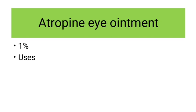I have discussed these cycloplegic drugs in my previous video on MBBS theory exams made easy, so you can go through that. Just to complete it: the atropine eye ointment comes in both ointment form and drop form, but ointment is preferred over the drops because of less systemic penetration. It comes as 1% ointment. It is used in cycloplegic refraction in children less than 5 years of age. It is also used in uveitis.